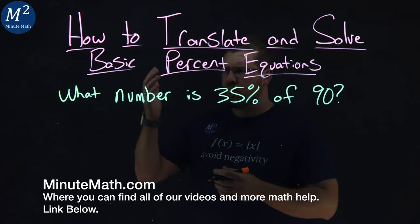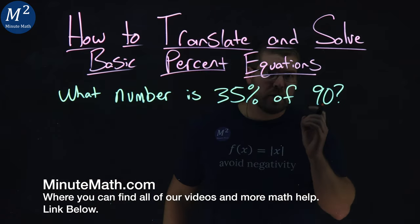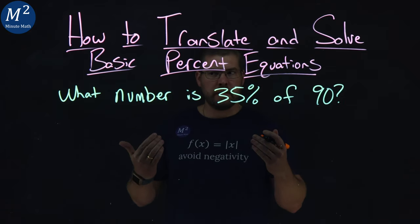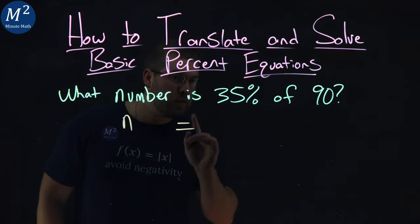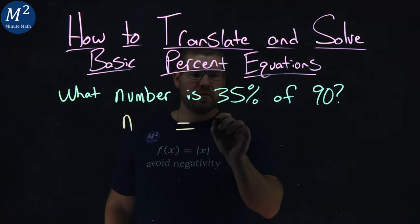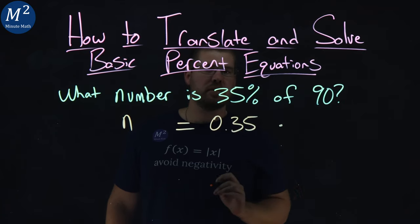We're given this problem right here. What number is 35% of 90? Let's convert this to an equation here. What number n is equal sign, 35% of the decimal 0.35, of multiplication, 90?